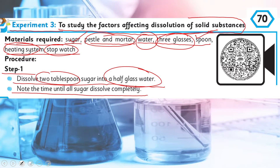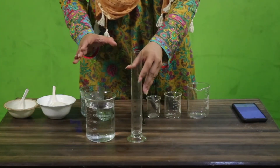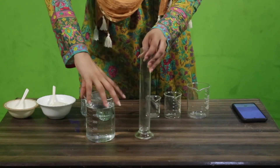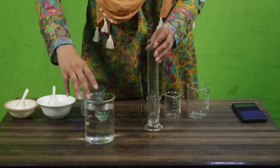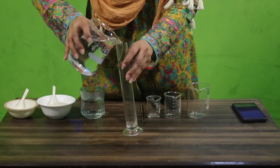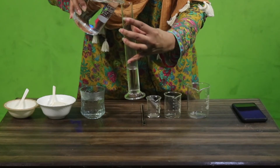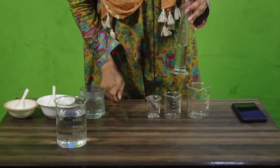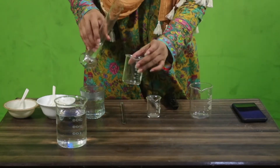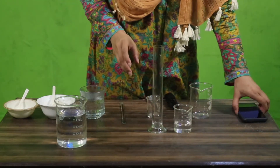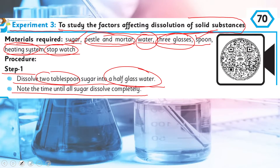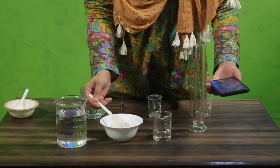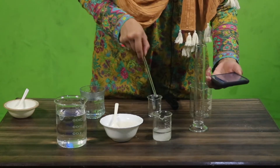First, I will measure the water carefully, because we need the same amount of water in all steps of the experiment. I have a measuring cylinder here and I will use 40 ml of water for each step. I pour it into a beaker. This is the stirrer for mixing. I will now add two tablespoons of regular sugar — one and two — and when I start mixing I will switch on the stopwatch.